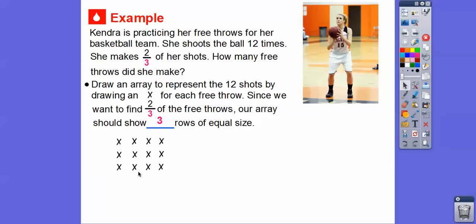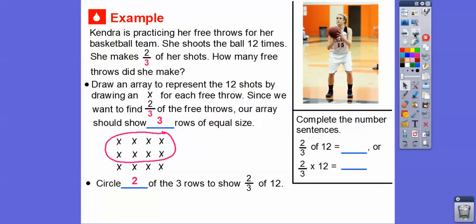So here's 12 of these X's right here in three different rows right there. Do you see that? One row, two row, three rows right there. All right, and then we're going to circle two of them. So let's circle two of those three rows to show two-thirds of 12. So I circled those two rows right there.